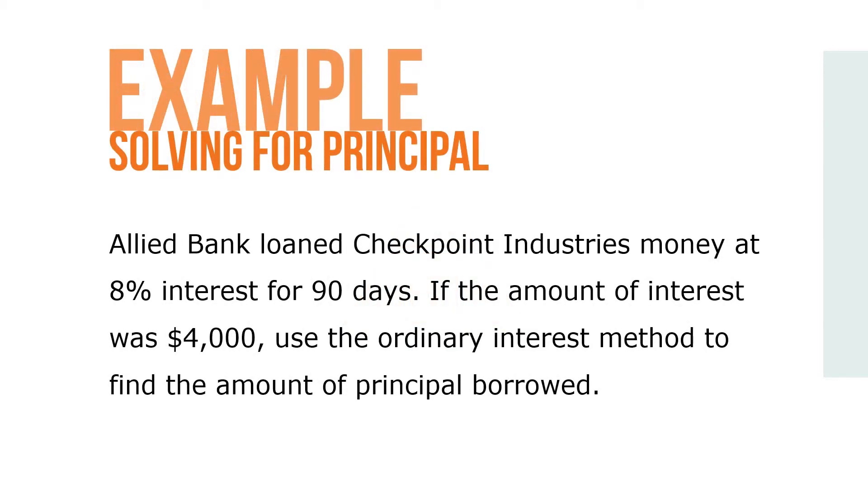Here's an example. Allied Bank loaned Checkpoint Industries money at 8% interest for 90 days. If the amount of interest was $4,000, use the ordinary interest method to find the amount of principal borrowed.